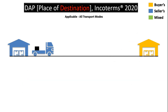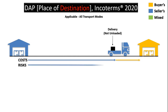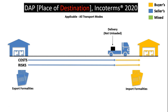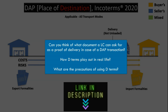Next are the D terms. First is DAP, or Delivered at Place. DAP requires the seller to deliver to a place named by the buyer, typically the buyer's premises. The buyer is responsible for unloading. The seller carries out export formalities and the buyer carries out import formalities, but the seller bears cost till the destination place. The seller is at much higher risk and bears much higher cost in all three D terms, as delivery is not deemed complete until the goods reach the buyer's country.